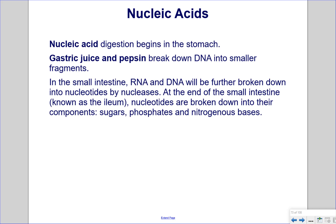Nucleic acids. Nucleic acid digestion begins in the stomach, where gastric juice and pepsin break down DNA into smaller fragments. In the small intestine, RNA and DNA are further broken down into nucleotides by nucleases. At the end of the small intestine, known as the ileum, nucleotides are broken down into their components: sugars, phosphates, and nitrogenous bases.